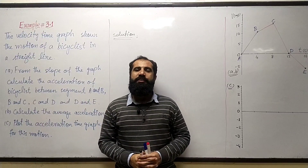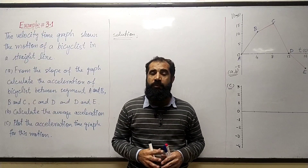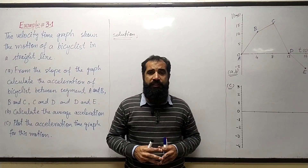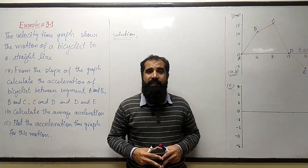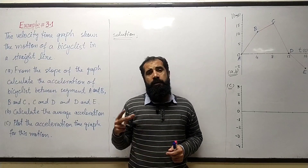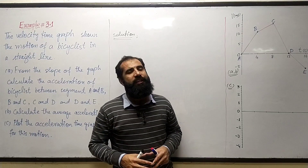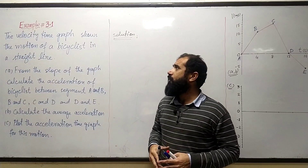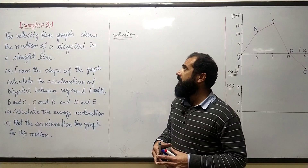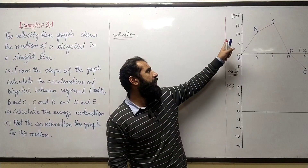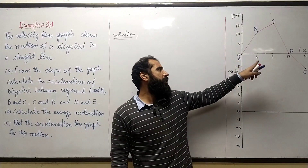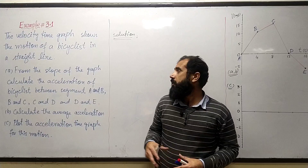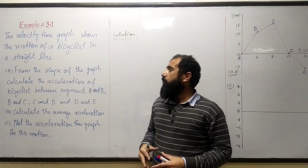Bismillahirrahmanirrahim, Assalamualaikum. In this short video we will do the first year physics textbook chapter number 3, numerical example 3.1, which is related to the velocity-time graph. The statement of the question is: the velocity-time graph shows the motion of a bicyclist in a straight line. The graph is given here, showing the motion of a bicyclist along a straight road.